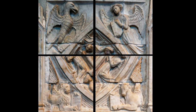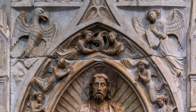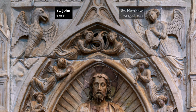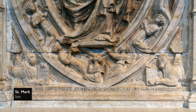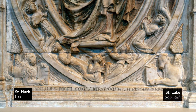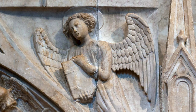We have four winged creatures. From the top left, we have an eagle that stands for Saint John. To the right, a winged man that is Matthew. On the lower left, a lion that is Saint Mark. And then on the lower right, we have an ox, or what sometimes is described as a calf, and that is Luke. Each of the four evangelists is holding a book, which is a reference to the gospel that they wrote.